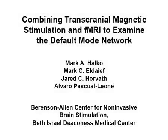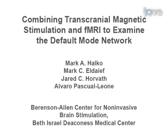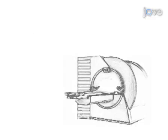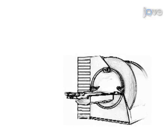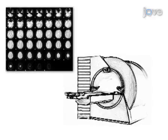The overall goal of this procedure is to alter cortical excitability using repetitive transcranial magnetic stimulation and then examine these effects on default network brain activation using functional MRI. This is accomplished by first obtaining a baseline anatomical scan of your subject that can be used for targeting a cortical stimulation site.